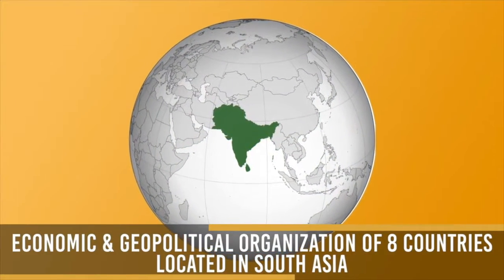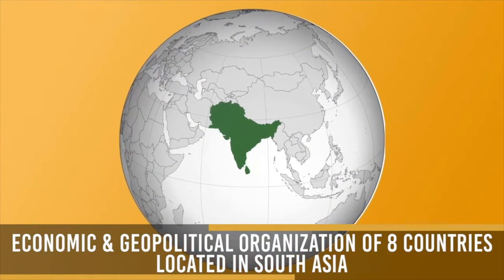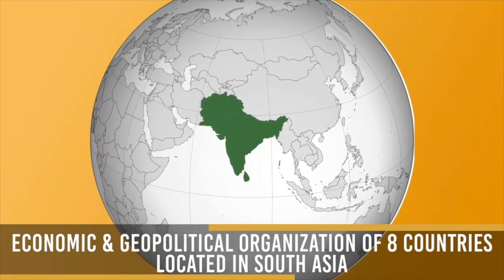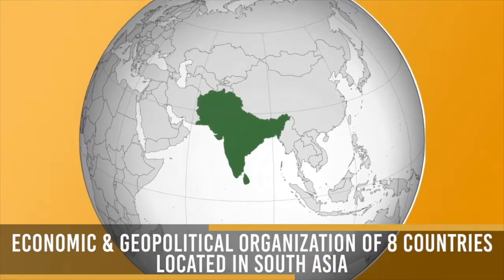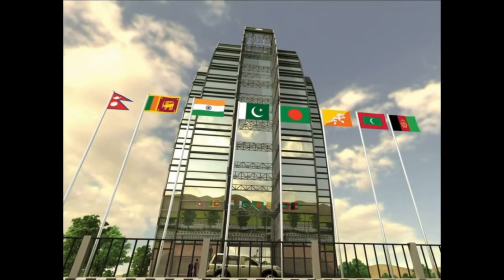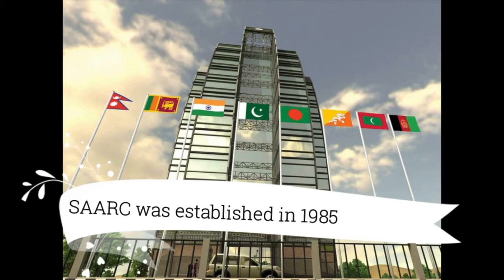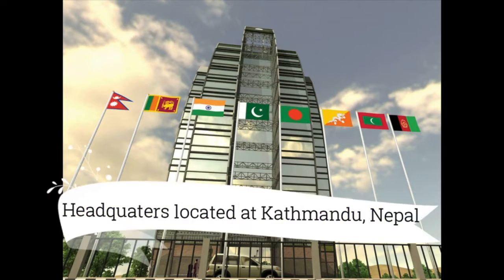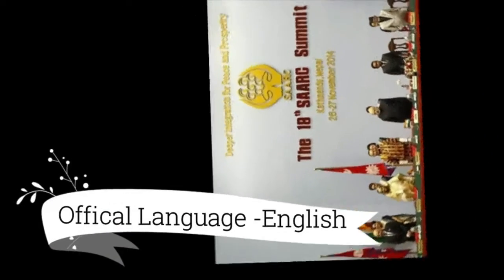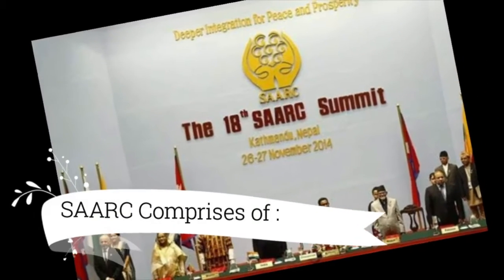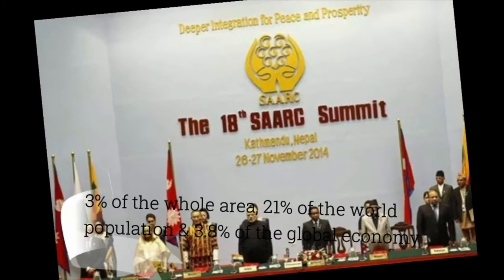SAARC is the regional intergovernmental organization and geopolitical union of nations that consists of 8 countries located in South Asia. It was established in 1985. The headquarters is located in Kathmandu, Nepal, and the official language of SAARC is English.